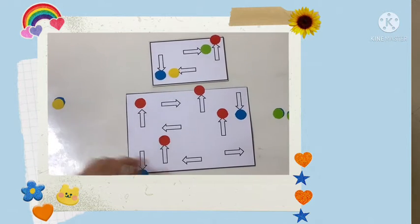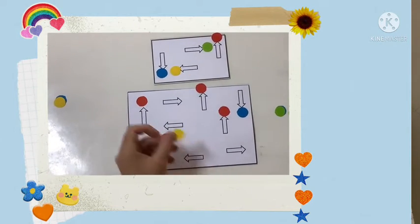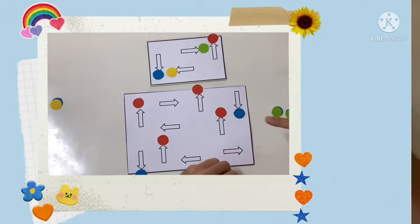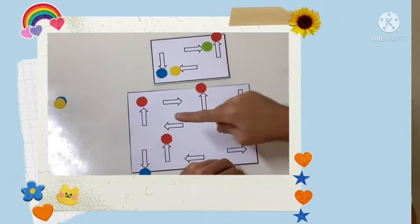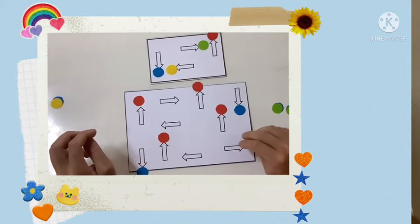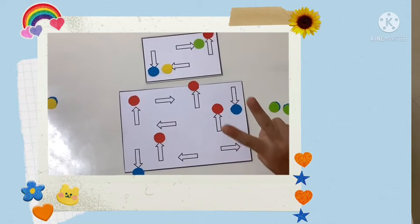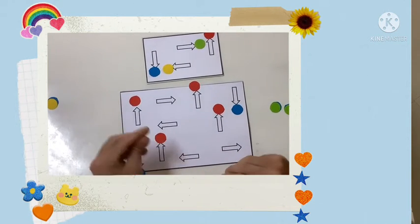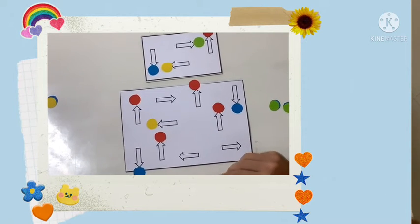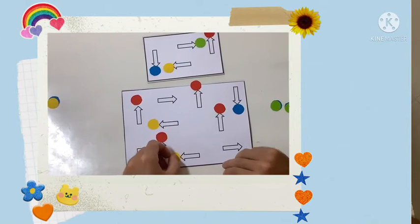Let's do yellow next. All my arrows going left need a yellow circle. I see two arrows that will get yellow: one, two.